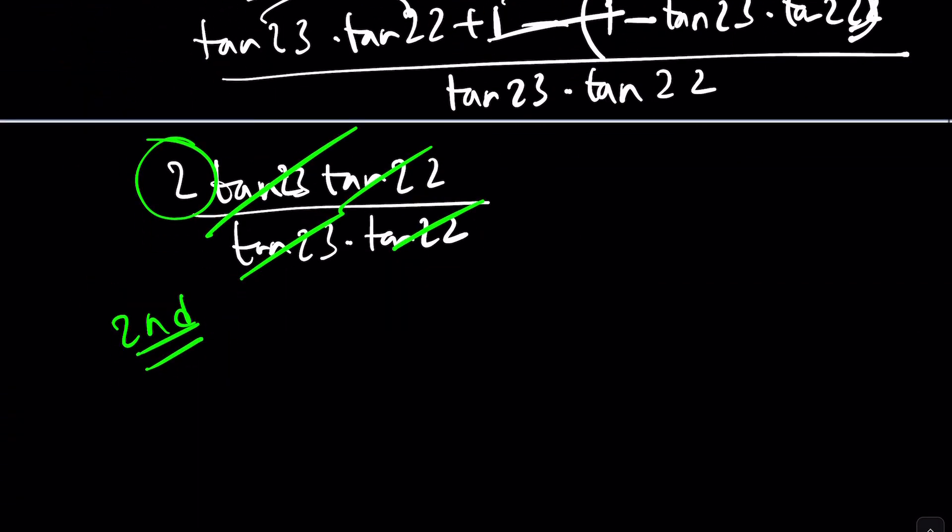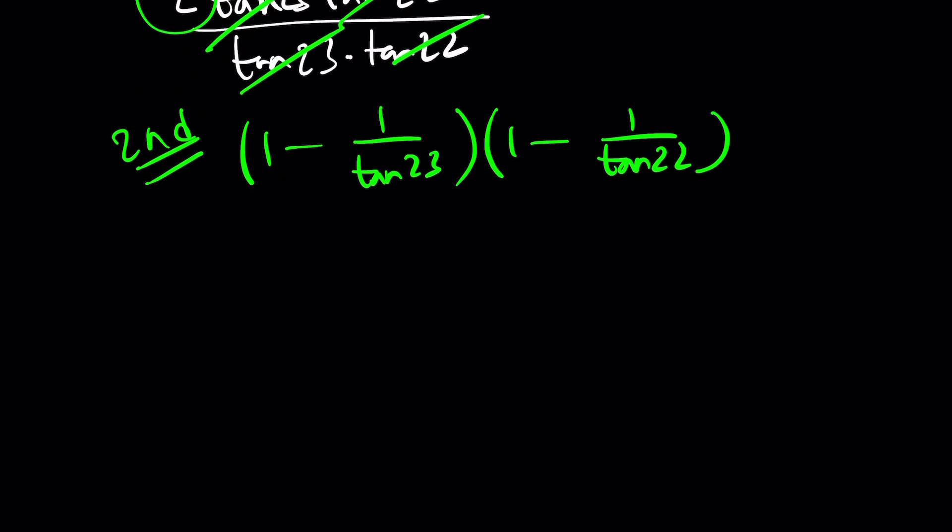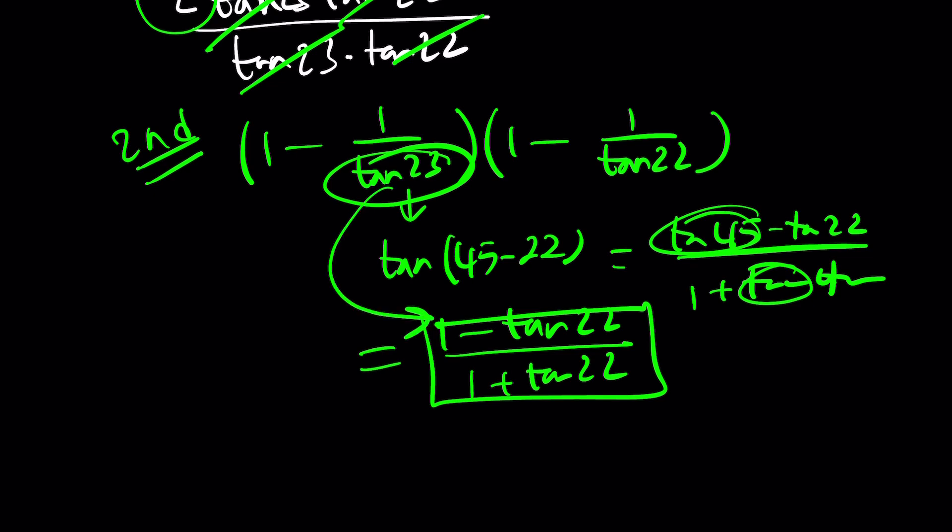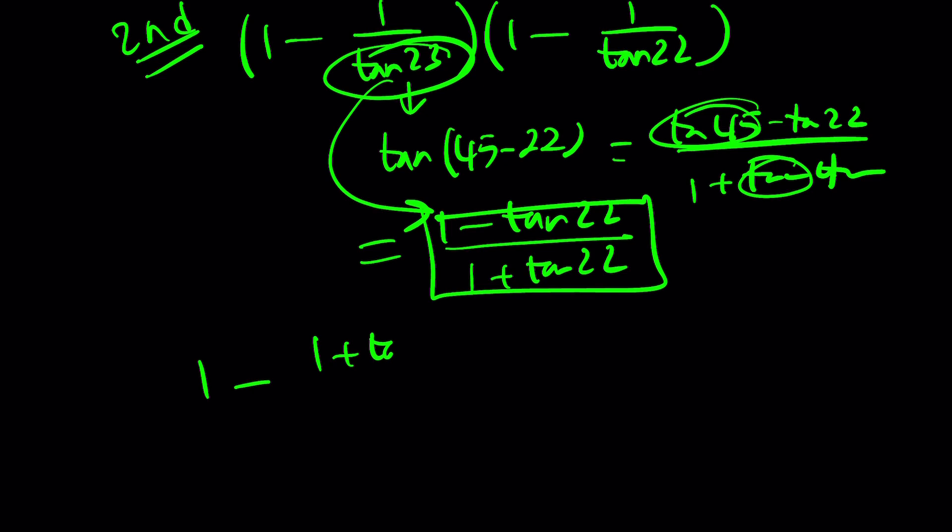1 minus 1 over tangent 23, multiply by 1 minus 1 over tangent 22. So, here's what you can do. You can replace tangent 23 with tangent 45 minus 22. And then, use the formula. Tangent 45 minus tangent 22 divided by 1 plus tangent 45 times tangent 22. This is 1, this is 1. So, from here, we're going to get something like 1 minus tangent 22 divided by 1 plus tangent 22. And then, we're going to flip it and subtract from 1. And then, just make a common denominator and figure out the rest. The rest should be pretty easy.